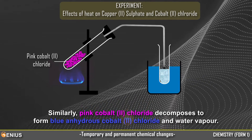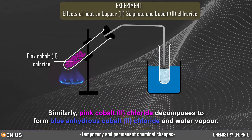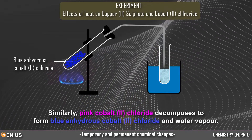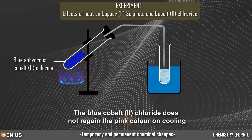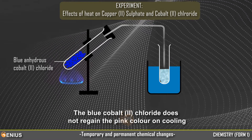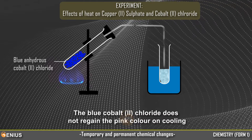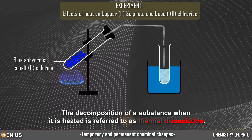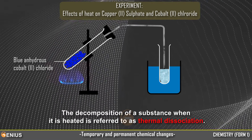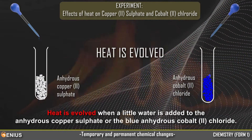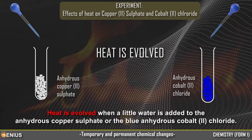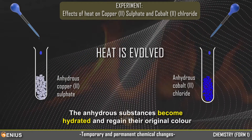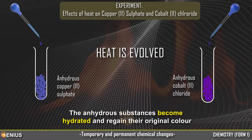Similarly, pink cobalt-2 chloride decomposes to form blue anhydrous cobalt-2 chloride and water vapor. The blue cobalt-2 chloride does not regain the pink color on cooling. The decomposition of a substance when it is heated is referred to as thermal dissociation. Heat evolves when water is added to the anhydrous copper-2-sulfate or the blue anhydrous cobalt-2 chloride, and the anhydrous substances become hydrated and regain their original color.